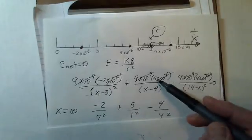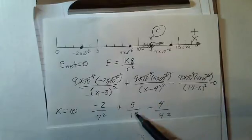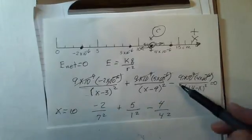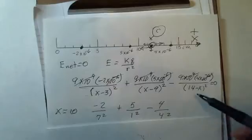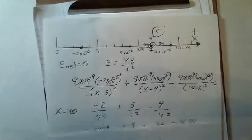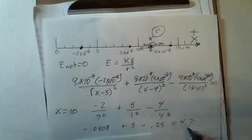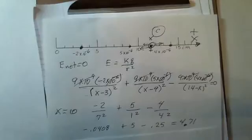Here I've got 5 in the numerator. I'm testing X equals 10. 10 minus 9 is 1 squared. I've got a minus sign, I've got a 4, 14 minus 10 is 4 squared. That generates minus 0.0408 plus 5 and minus 0.25 with a net of 4.71. Not close enough to zero.